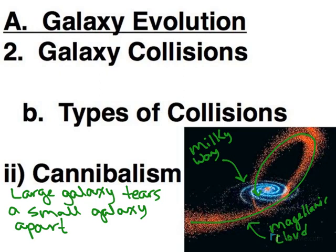There's evidence we've done this in the past. We find stars in our own Milky Way that don't quite fit in, and we realize that they have come from galaxies that we have eaten in the past. So both ways are counted as a collision — one destroys both galaxies, and in cannibalism only the small galaxy gets destroyed.